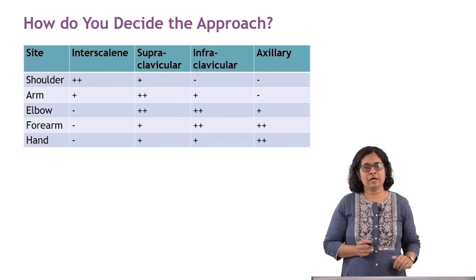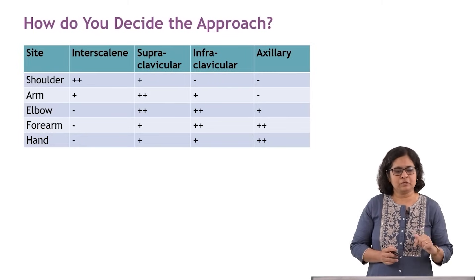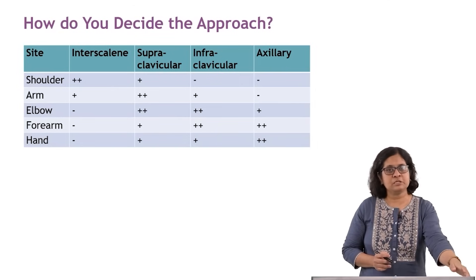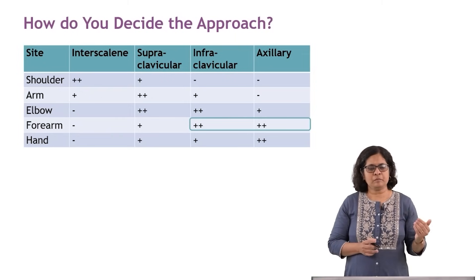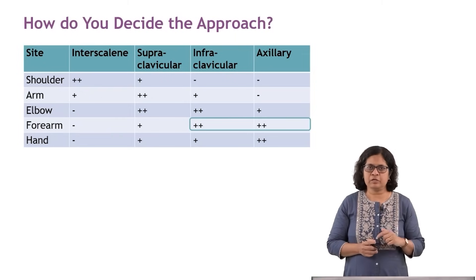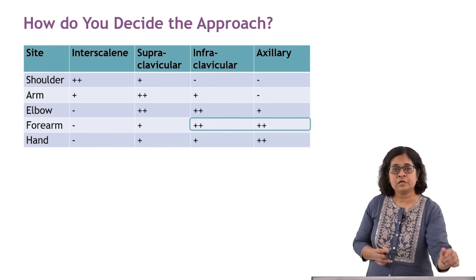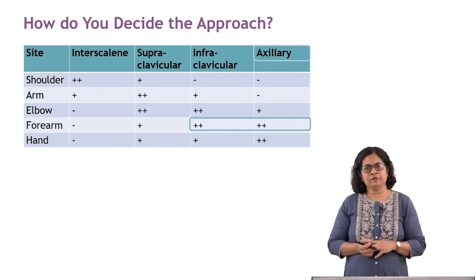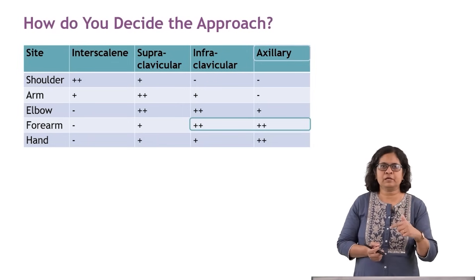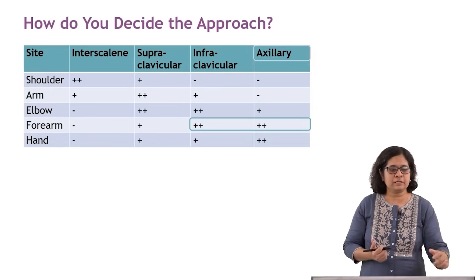Our patient has a distal radius fracture, so for forearm surgery, infraclavicular as well as axillary block would be the block of choice. We would choose the axillary block. This is what is asked in the exam — why choose axillary over infraclavicular?